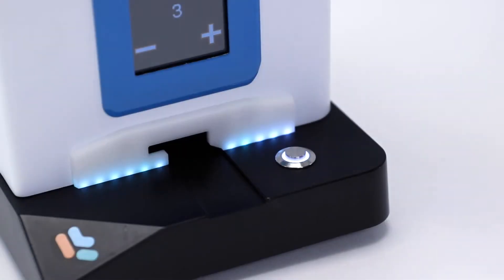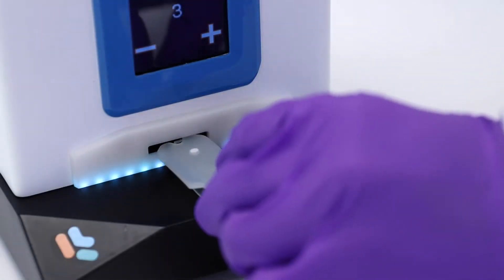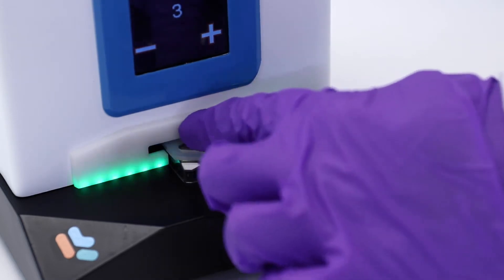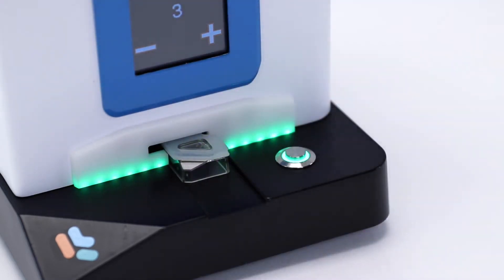With typical RNA LNP materials, Spark cartridges are designed to mix with a 2 to 1 aqueous to organic volume ratio followed by a 1 to 1 dilution.